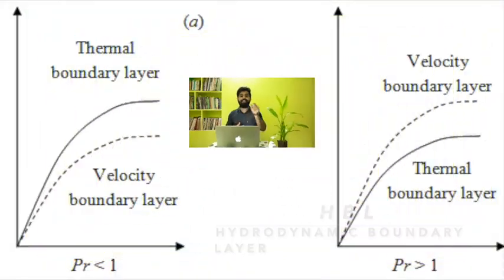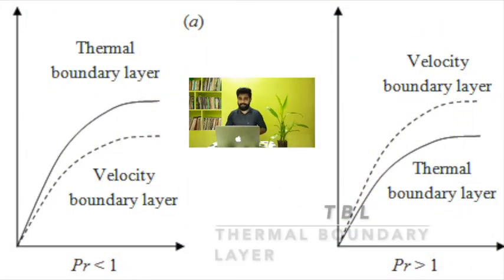When Prandtl number is greater than 1, we can say that the thickness of the hydrodynamic boundary layer is bigger than that of the thickness of the thermal boundary layer.